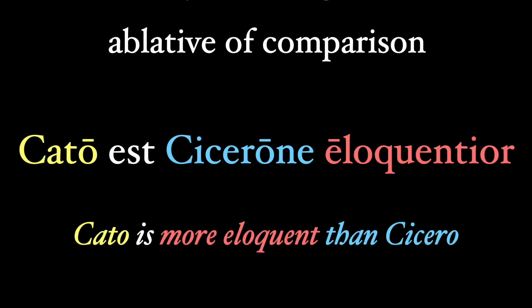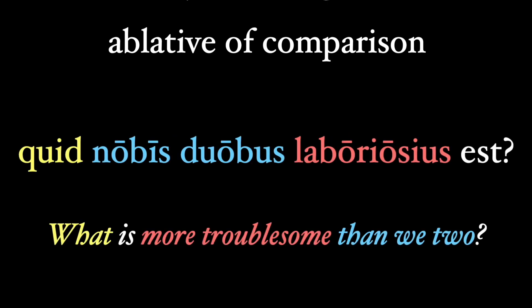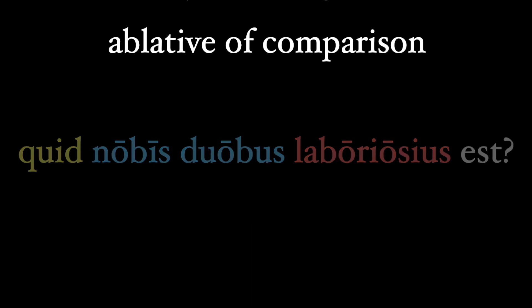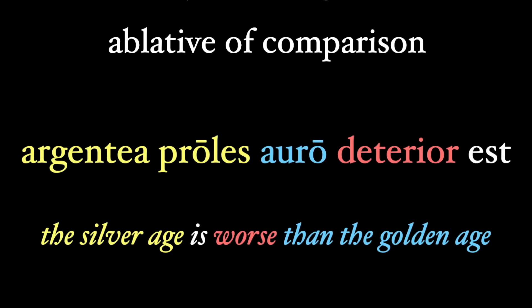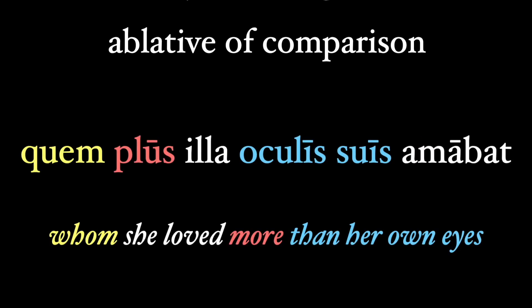A couple more examples: 'Cato est Cicerone eloquentior' — Cato is more eloquent than Cicero. 'Quid nobis duobus laboriosius est?' — What is more troublesome than we two? Here 'laboriosius' is the neuter comparative and 'nobis duobus' is our ablative of comparison. The silver age is described as worse than the golden age: 'argentea proles auro deterior est', where 'auro' is our ablative of comparison.